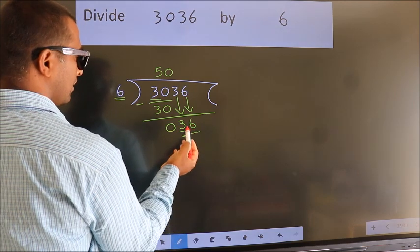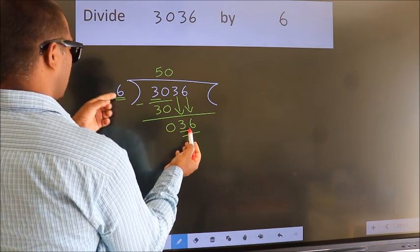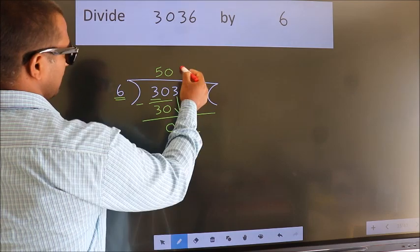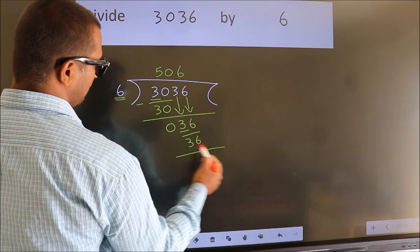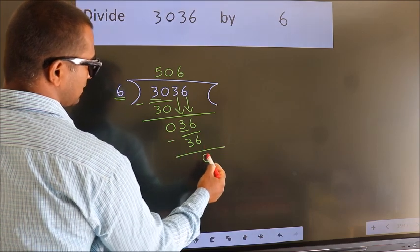So, 36. When do we get 36? In the 6 table. 6 times 6 is 36. Now, we subtract. We get 0.